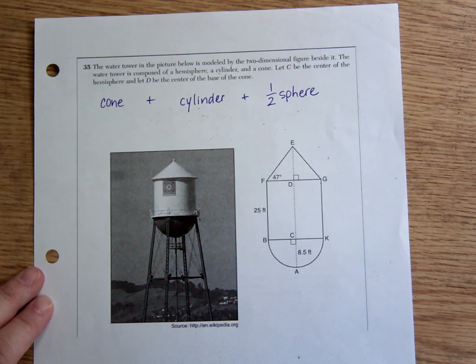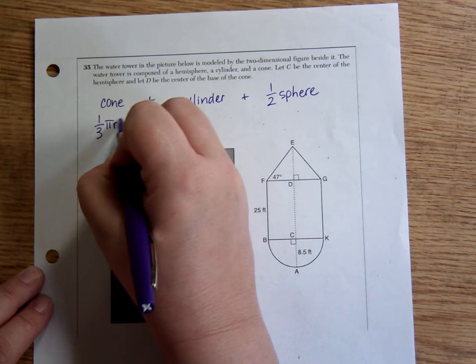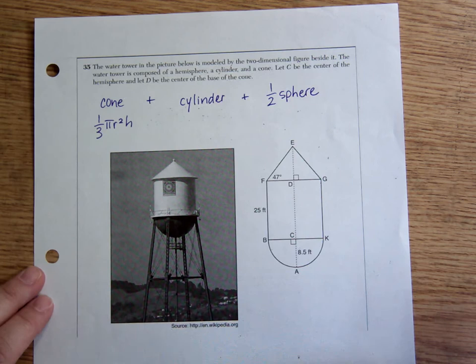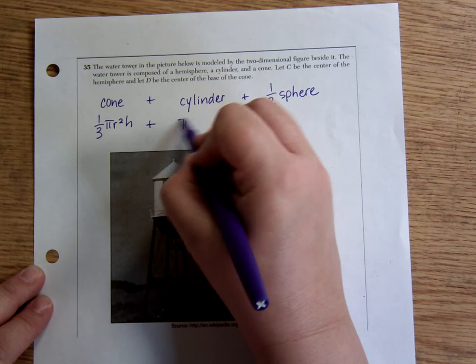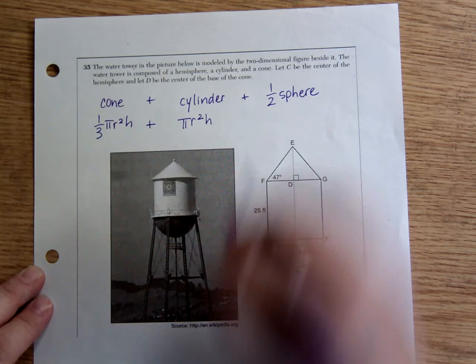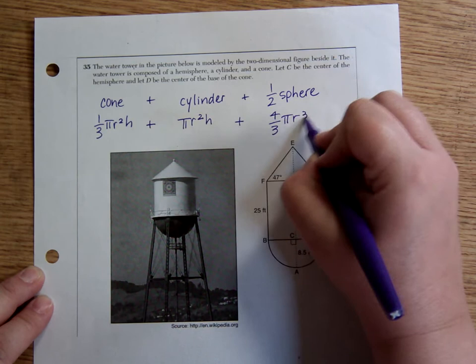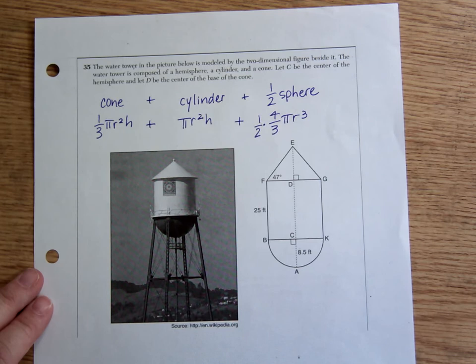Let's look at the formulas for those things. The formula for a cone's volume is one-third pi r squared times h. This is the area of the base times the height, and in this case the base for a cone is a circle, so that's why pi r squared is there. Cylinder is area of the base times height, where again the base is a circle, so it's pi r squared times the height. And a sphere has formula four-thirds pi r cubed, but remember this isn't a full sphere, it's half a sphere, so I'm going to put one-half out front.